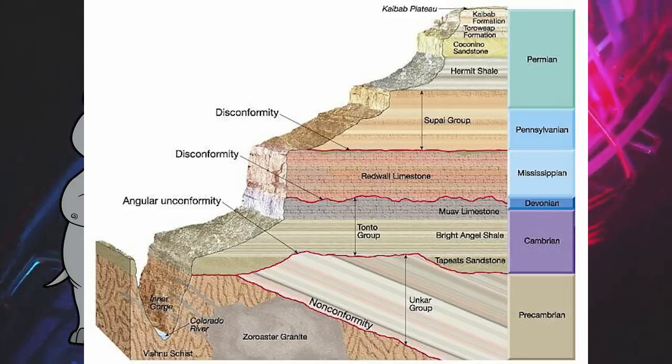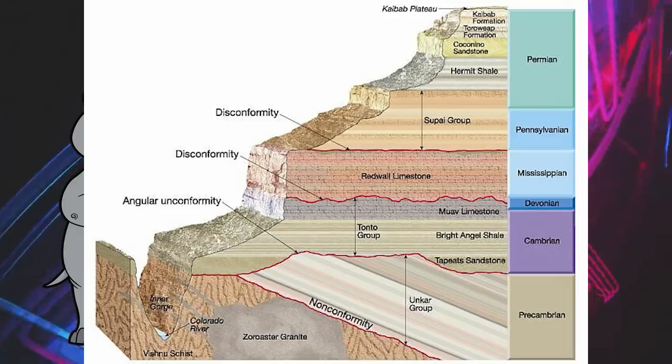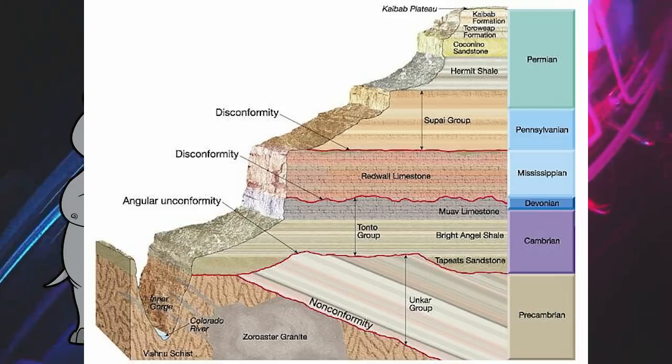But we're not worried about the specific numbers right now, just the order. So, so far we've got the Vishnu schist being the oldest, followed by the Zoroaster granite, then the Unkar group, and now the Tonto group. At this point it's fairly straightforward as there aren't any more intrusions and whatnot. It's all sedimentary depositional rocks that are horizontal to each other, so it's just a simple matter of the oldest being at the bottom and the youngest being at the top.